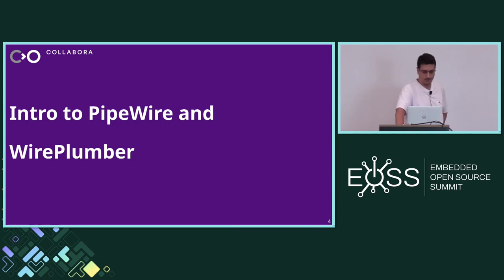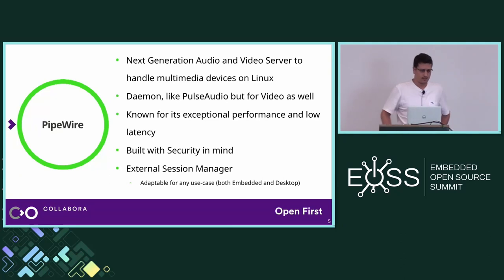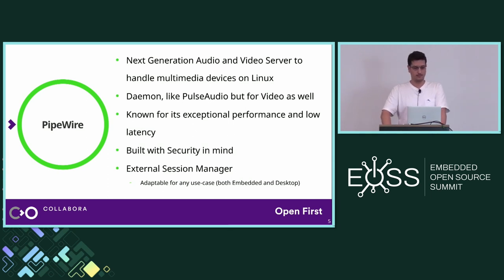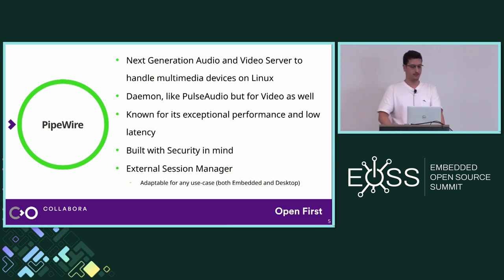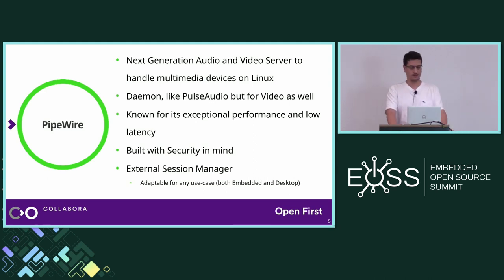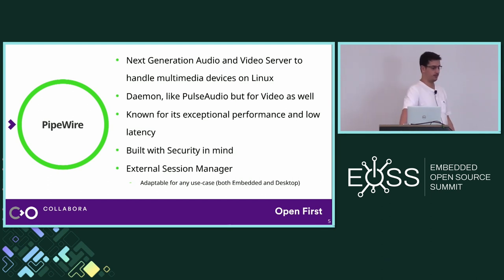Let's start with the first section: an intro to PipeWire and WirePlumber. PipeWire is the next-generation media server to handle multimedia devices on Linux. It's a user-space daemon like PulseAudio but it also handles video as well. It's known for its exceptional performance and low latency, and it's built with security in mind, which makes it perfect for embedded devices but also for desktop. Most importantly, it has an external session manager — not included in the project itself — that controls PipeWire and tells it what to do when an event happens, making PipeWire adaptable for any use case.